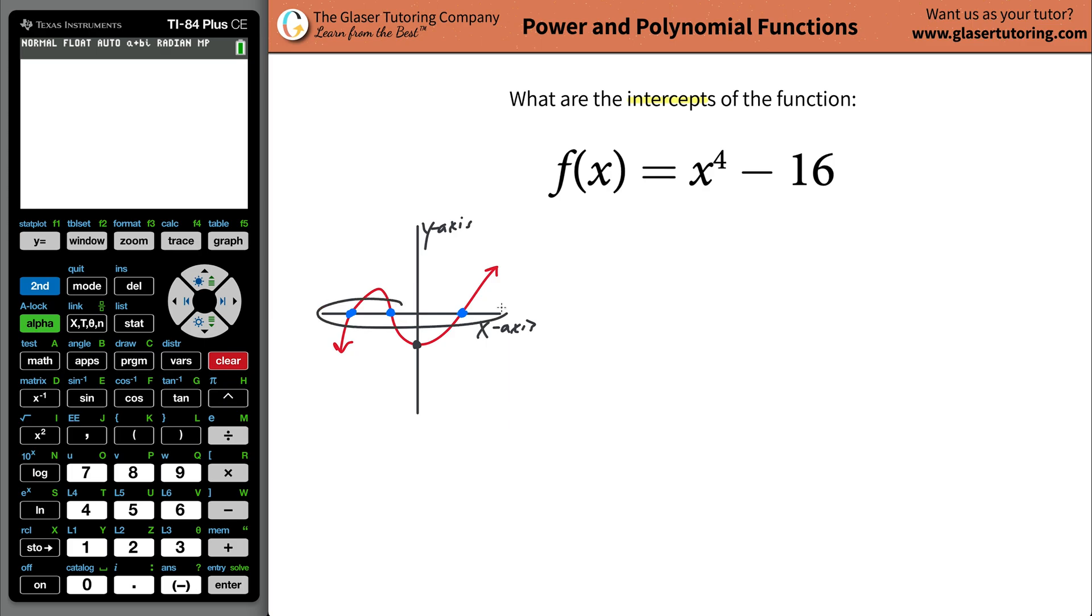Also, a graph could have one x-intercept. It could have no x-intercepts. It could have 3 or 4 or 10. It could have a bunch. And this graph, by the way, has no relationship to what this is. I just drew whatever came to my mind first.